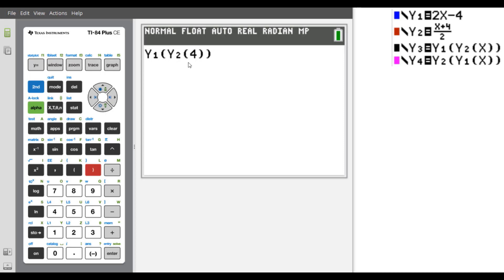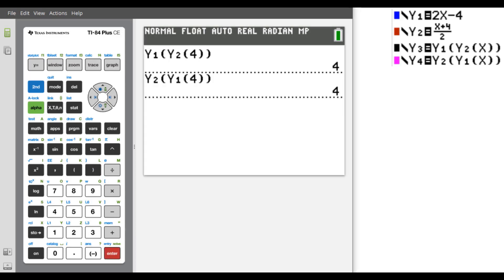Let's evaluate y1 of y2 of 4, and y2 of y1 at 4, and double-checking with y3 at 4, and y4 at 4.